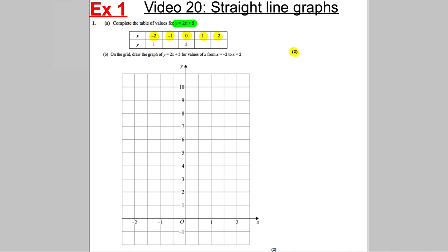First things first, let's put in the easy numbers first. When x is 0, y is 5. When x is 1, 2 multiplied by 1 is 2, add 5 is 7. Then put in 2: 2 multiplied by 2 is 4, add 5 is 9. You can see the sequence is going up in 2s, so it will go down in 2s — rather than playing around with negatives, do the positives and the 0 and work your way back.